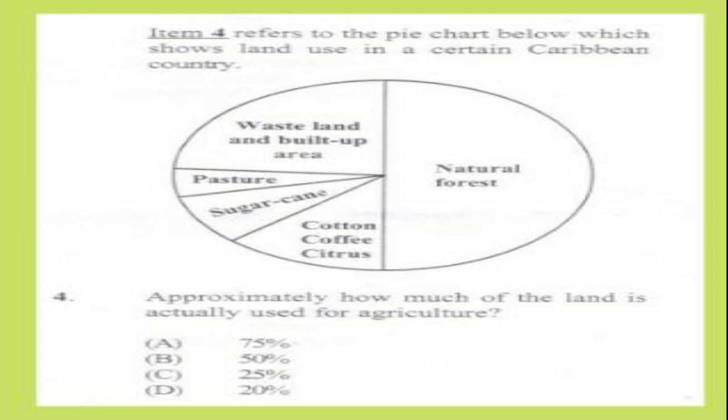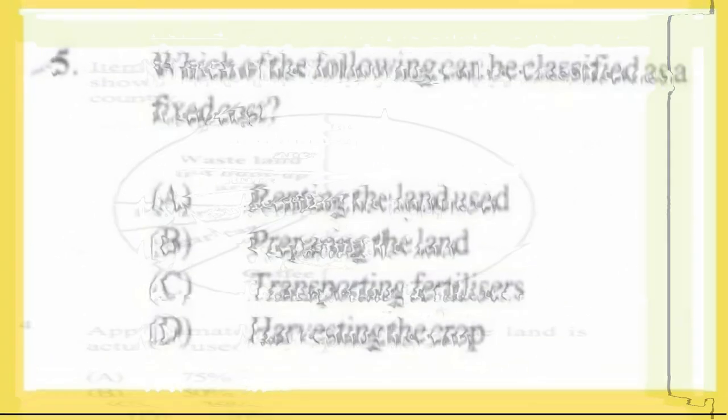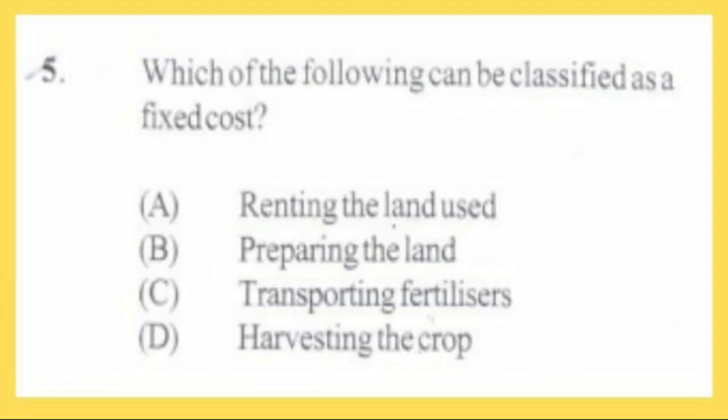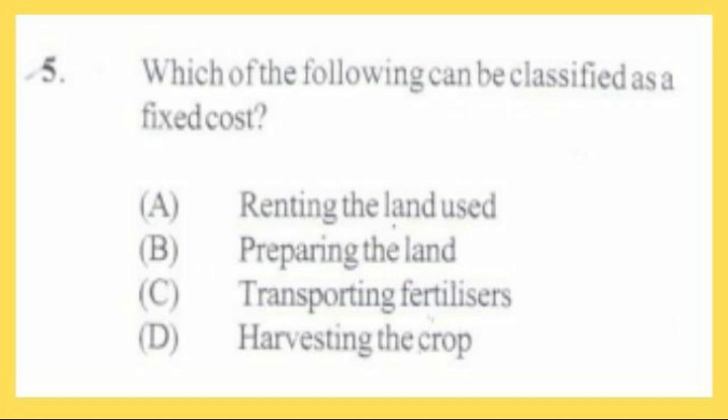Question number 5. Which of the following can be classified as a fixed cost? A. Renting the land used, B. Preparing the land, C. Transporting fertilizers, D. Harvesting the crop. The answer is A, renting the land used. Renting the land would be a contract, and once that contract is set, the cost in that agreement would be fixed.